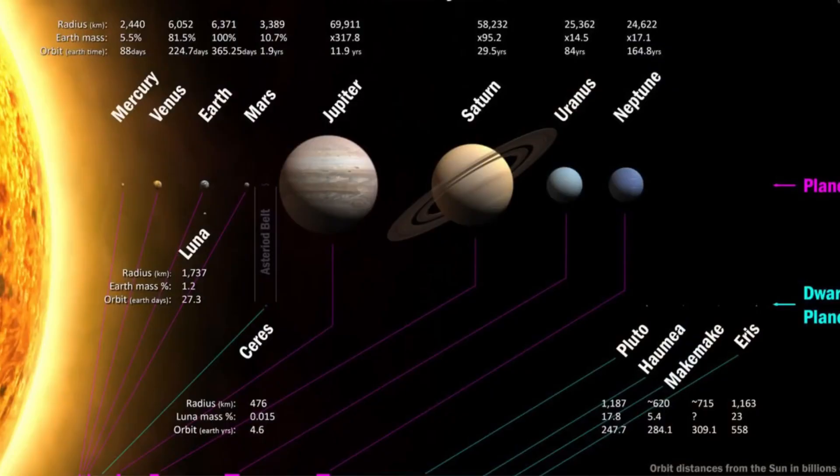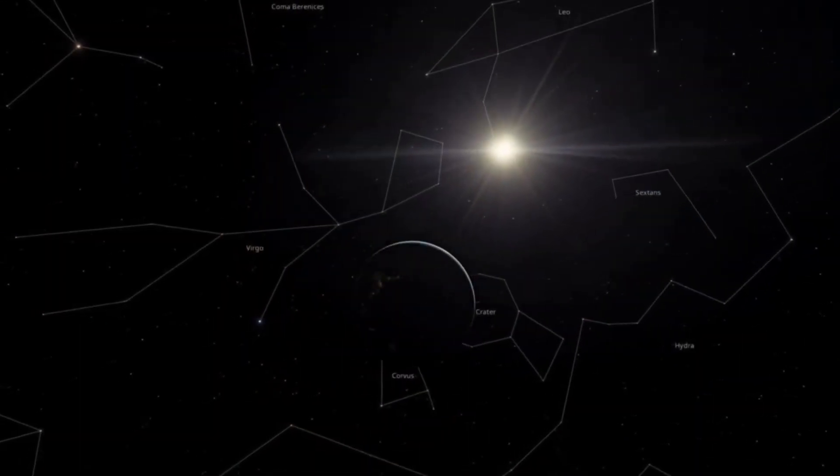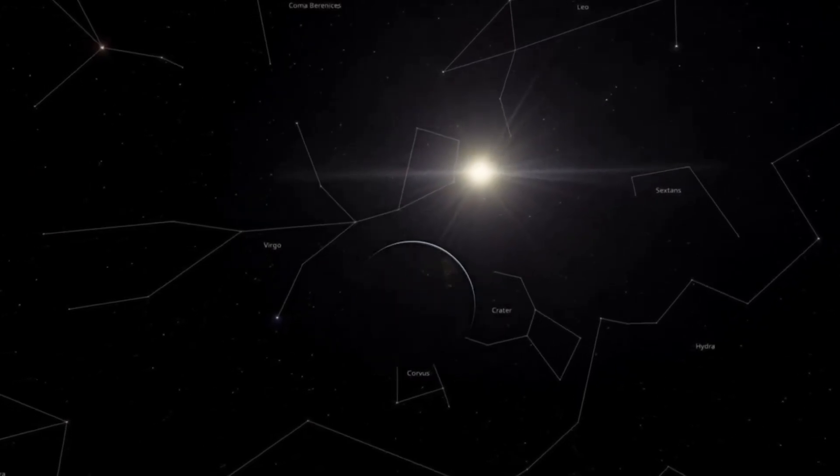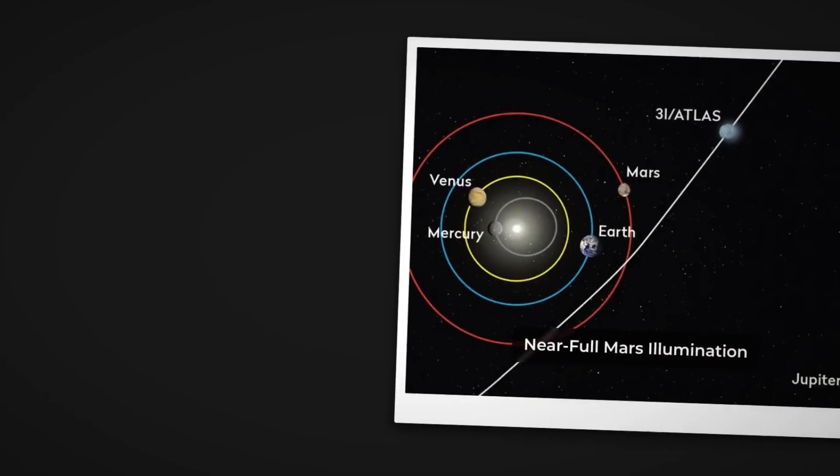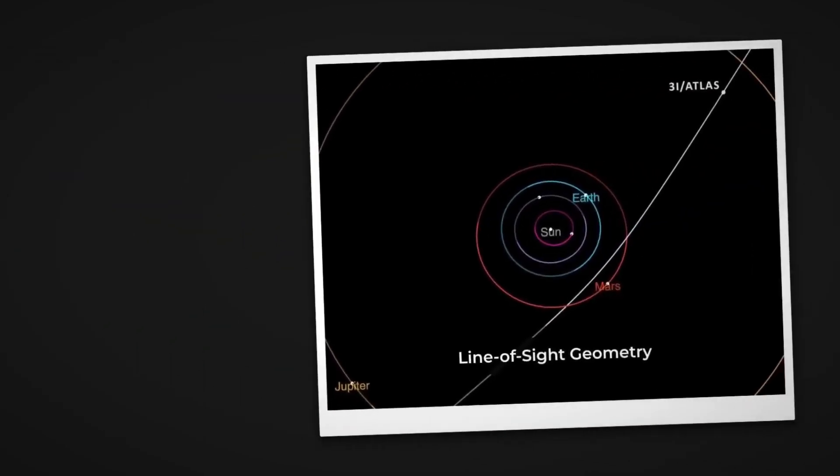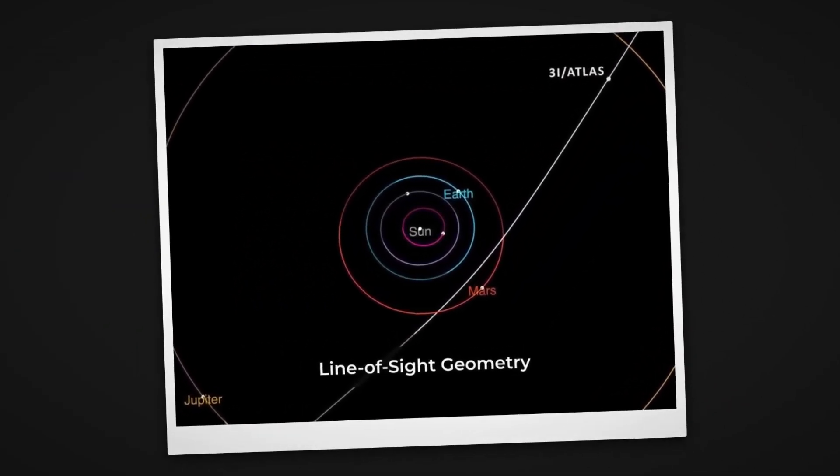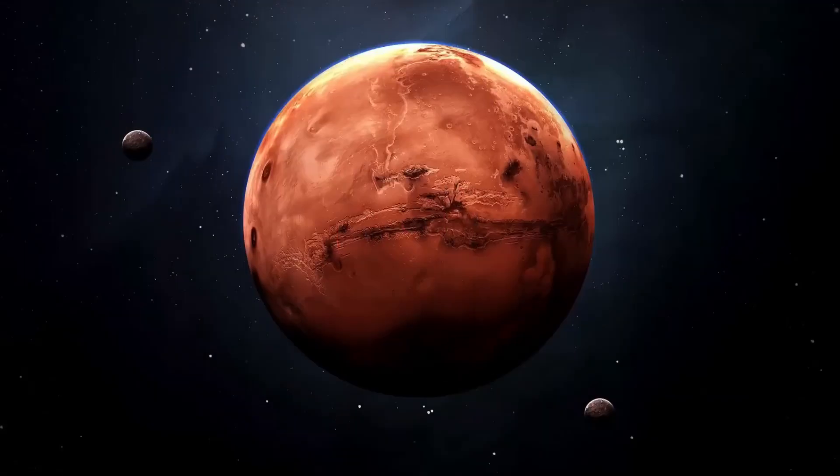Each pass is close enough for high-resolution imaging, yet far enough to avoid capture. The object's retrograde path, running opposite to the planets, offers perfect lines of sight free from the masking glare of the sun.